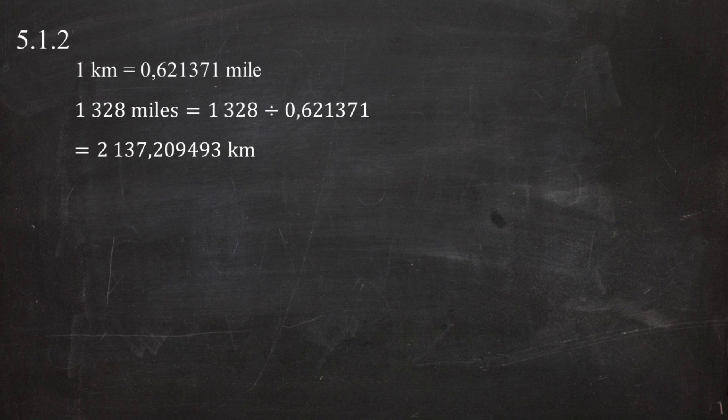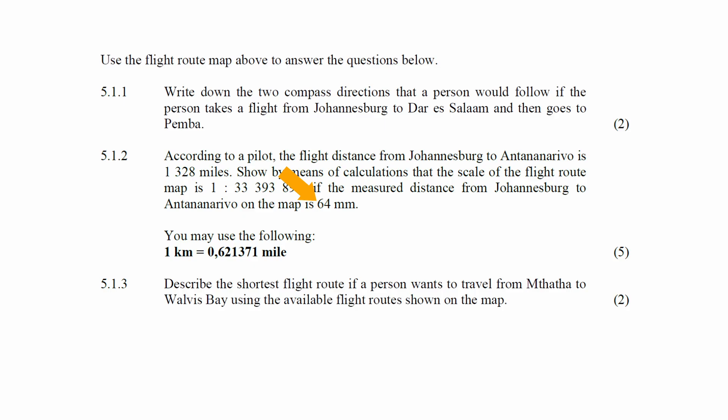The reason we convert the distance from miles to kilometers is that the map distance is given in millimeters, and both kilometers and millimeters are in the metric system. Eventually, we want to convert the distance from Johannesburg to Antananarivo from kilometers to millimeters in order to write the scale of the route map as a ratio scale.